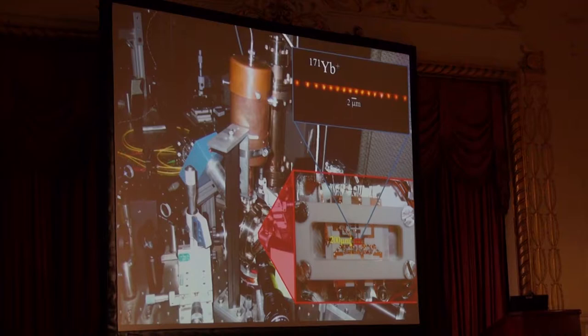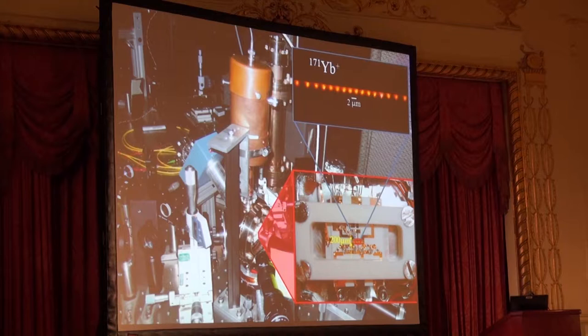We're ion trappers, so we start by loading ytterbium-171 ions into an RF Paul trap. The ions are spaced by about two microns or so, and here you can see 16 of them loaded into our trap.